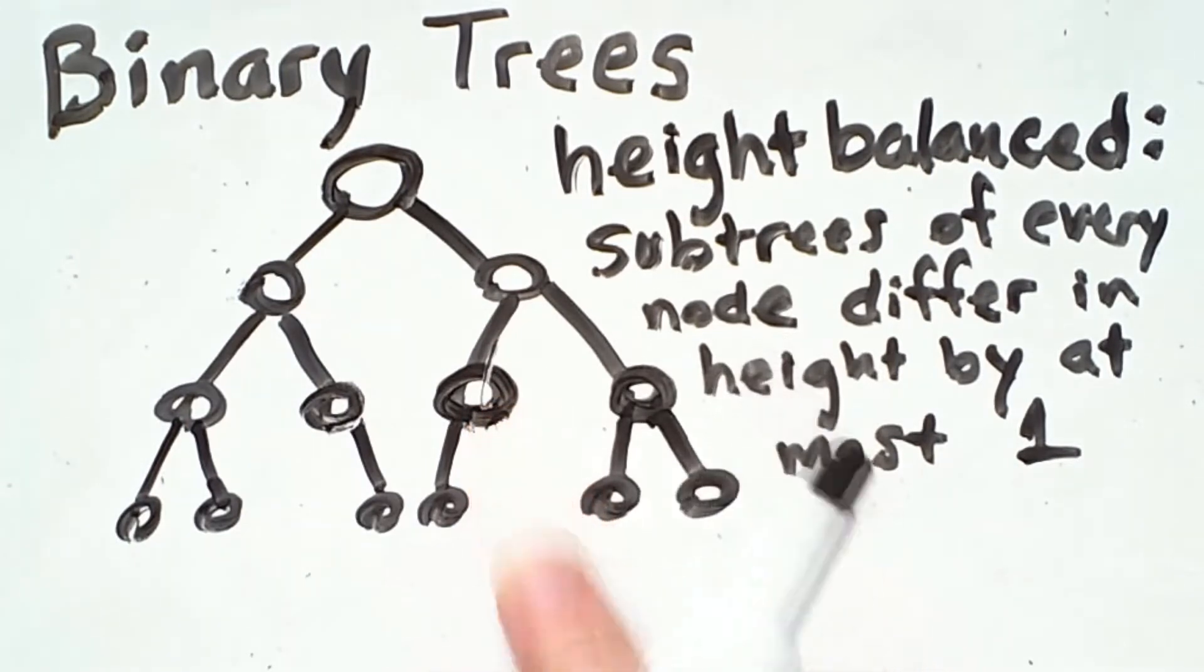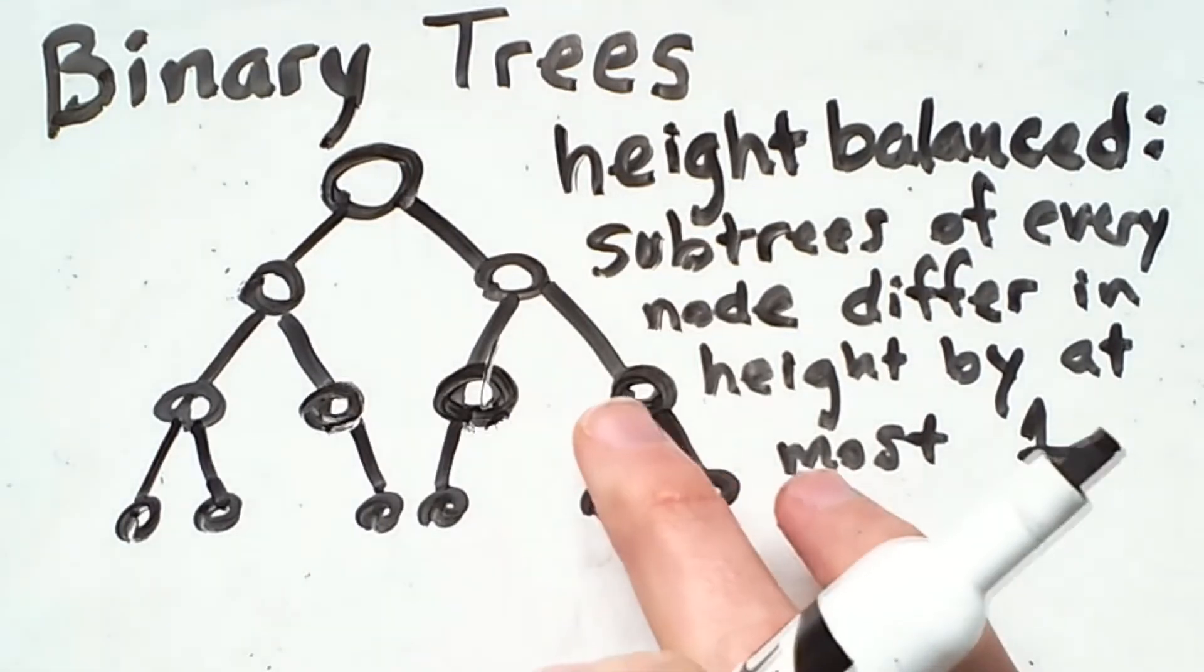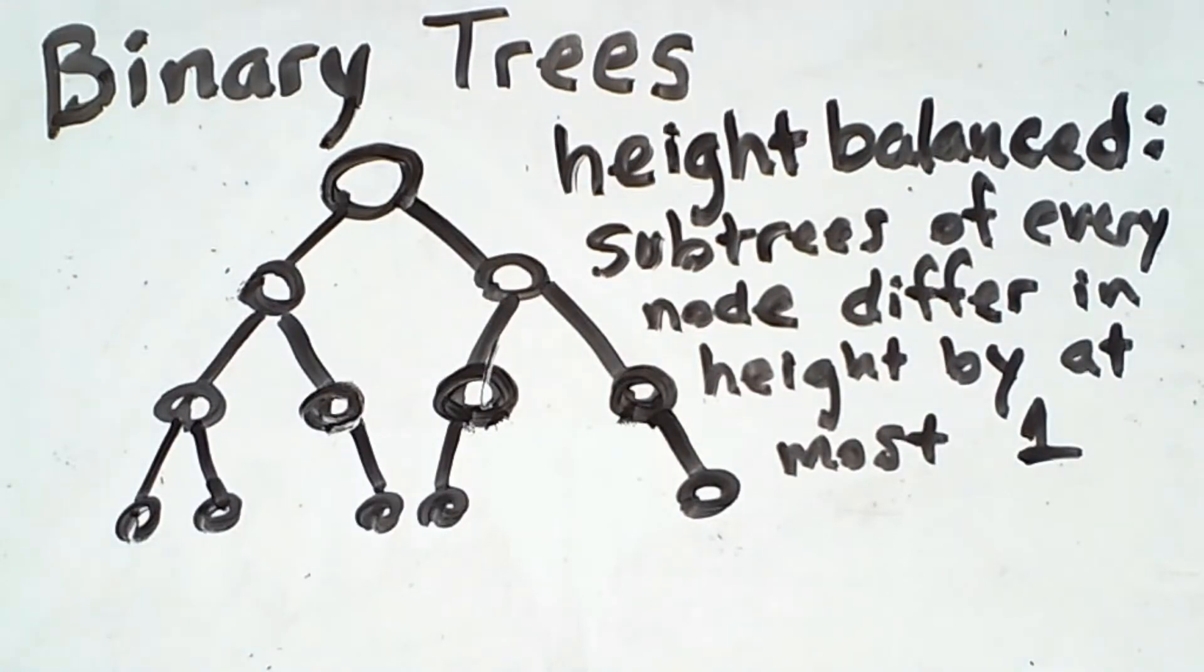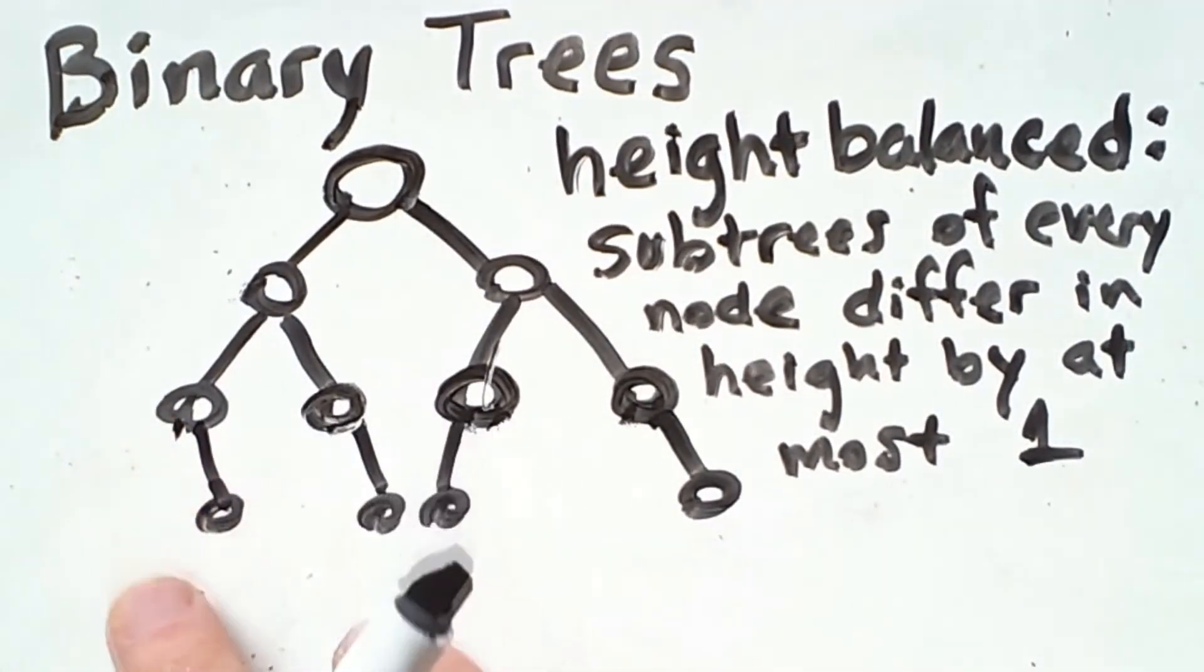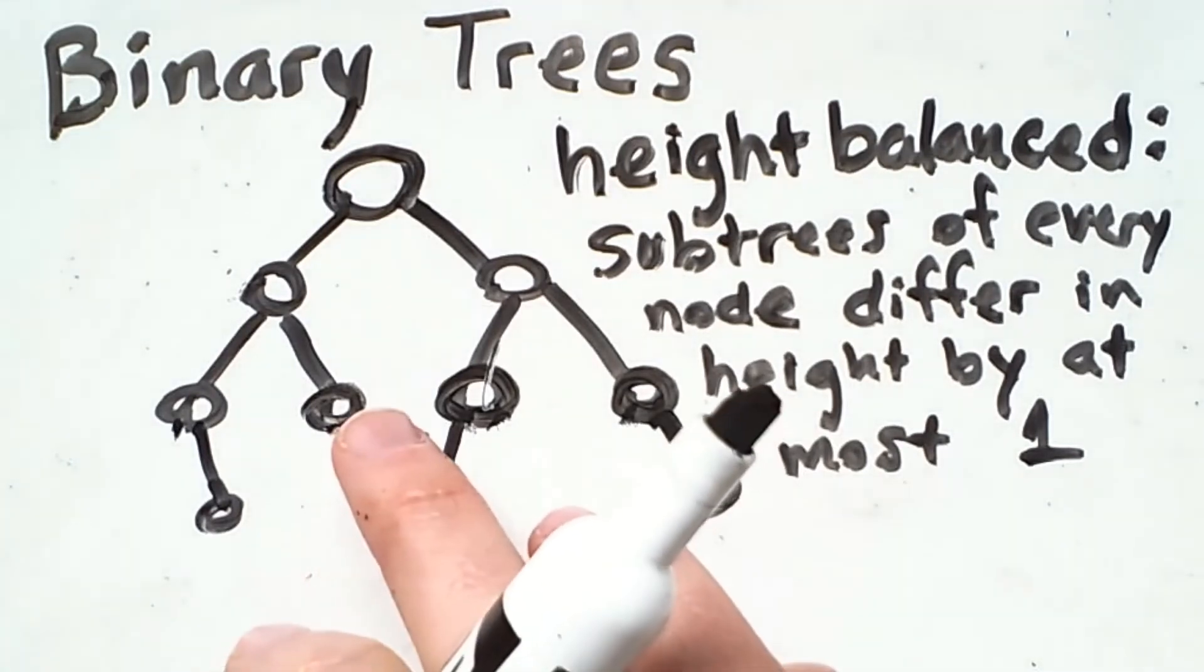I can remove this node and the tree remains height balanced. I can remove this node and the tree remains height balanced. And this one. And even this one.